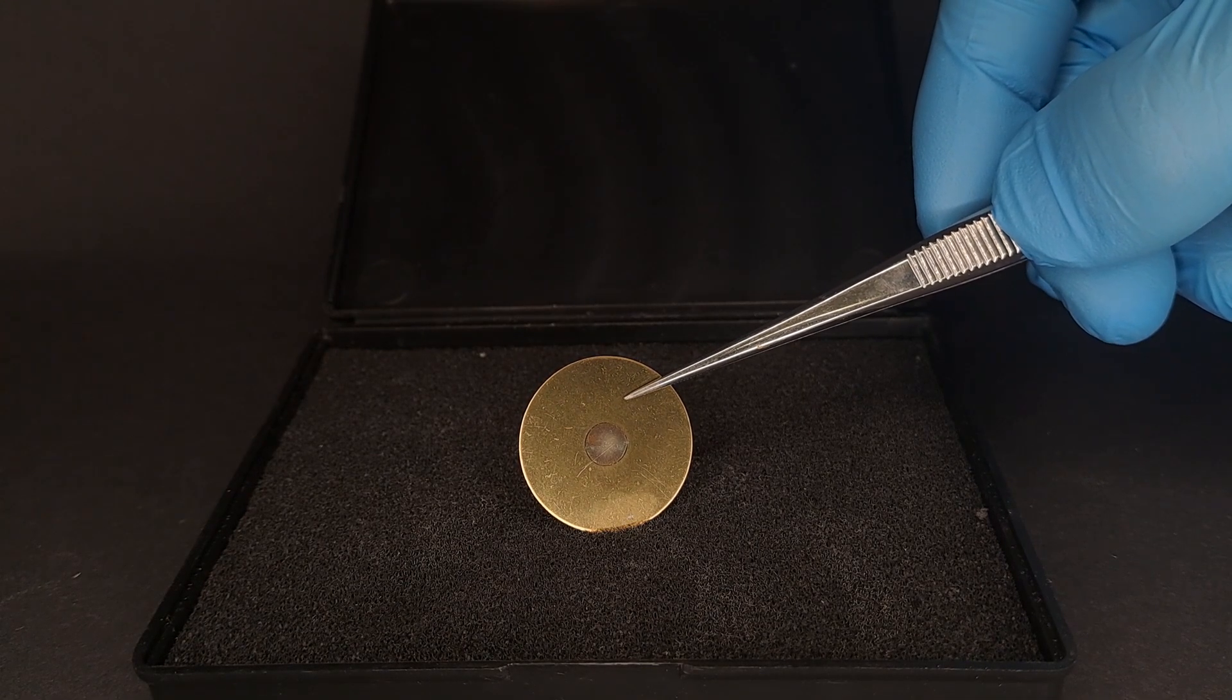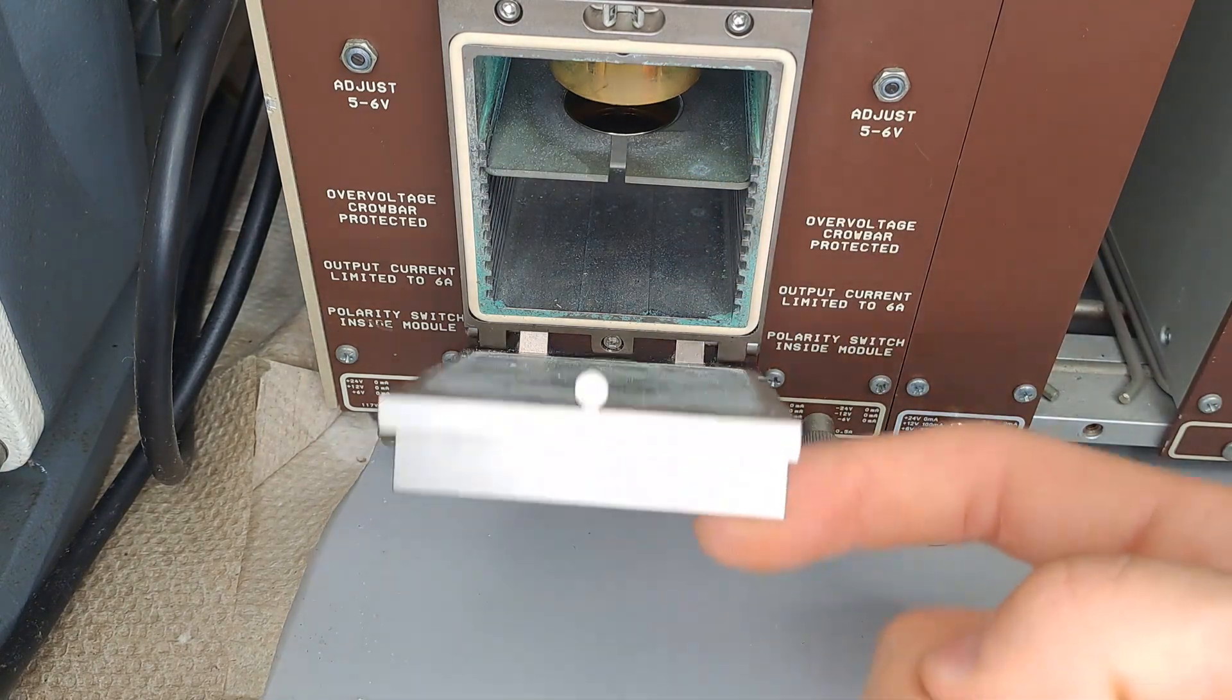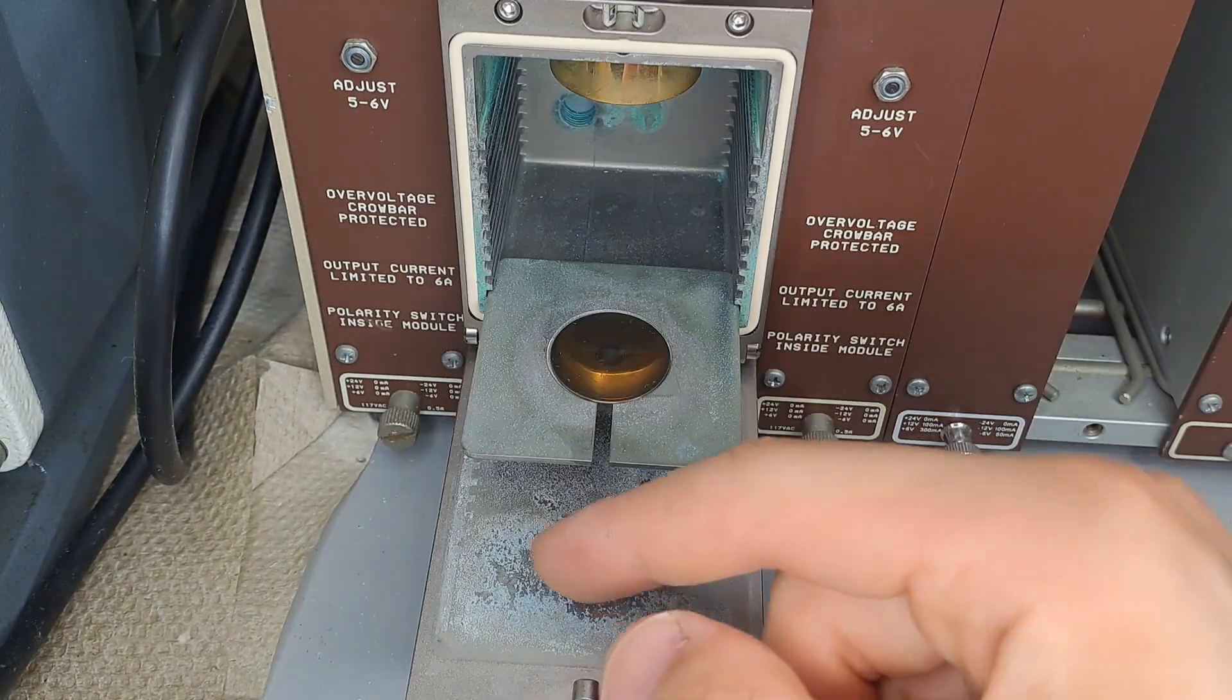For the calibration, the alpha source is inserted into the second slot. A vacuum is drawn and it's measured for 5 minutes, then again in the 5th and once more in the 10th slot.